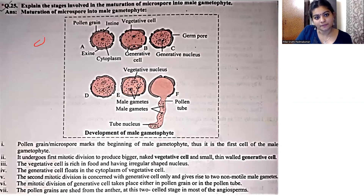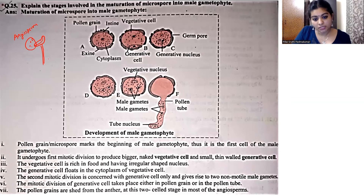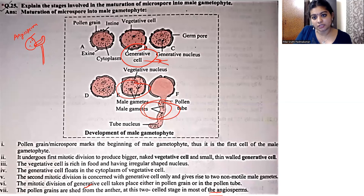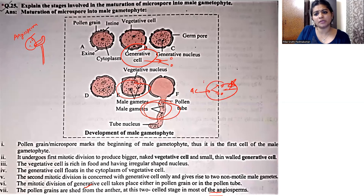In case of angiosperms, यह कौन से stage पर pollen को release करेंगे? Pollen grains are shed or released from the anther at the two-celled stage in most of the angiosperms. Most of the angiosperms के case में, anther pollen grain को इसी two-celled stage में release करता है — two-celled stage का मतलब है जब generative cell second mitotic division में आगे जाके दो non-motile male gametes बनाएगा, उस stage में pollen grain release होता है.